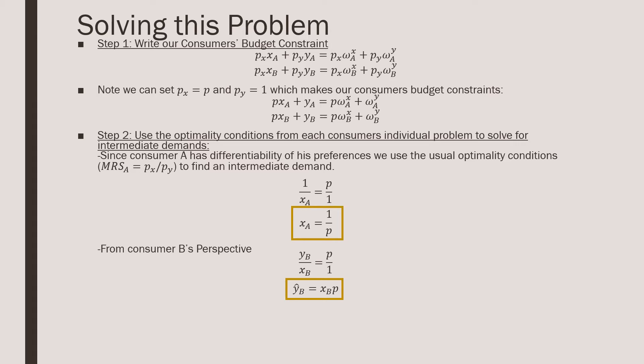Step number two is that we're going to use the optimality conditions for each one of our consumers and solve for the intermediate demands. This is where our marginal rate of substitution is going to be equal to P_X and P_Y. So for consumer A, we find that x_A is equal to one over P. And from consumer B's perspective, using that optimality condition, we find that intermediate demand y_B hat is equal to x_B times P.